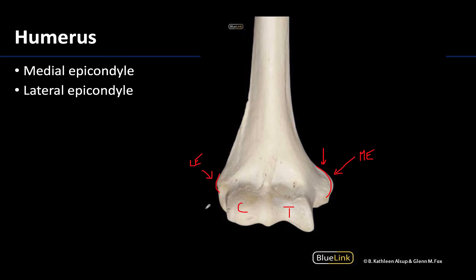With repetitive use of those muscles, this can lead to micro tears in the common extensor tendon, or it can even cause little tears in the periosteum that surrounds the actual bone of the lateral epicondyle, causing pain in this area. This is referred to as lateral epicondylitis, but more commonly you hear it referred to as tennis elbow.